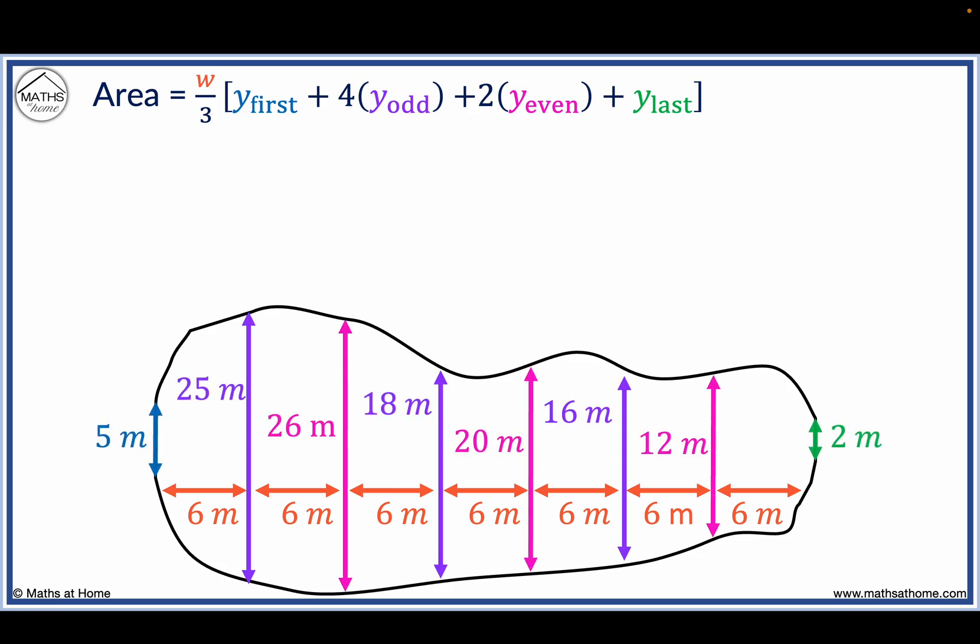We start by setting up the formula with W equals 6, since the width between the measurements is 6 metres. The first measurement, Y first, equals 5 metres. Y last equals 2 metres.